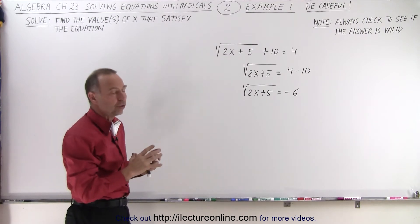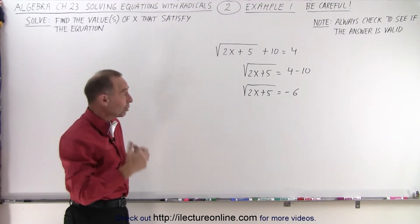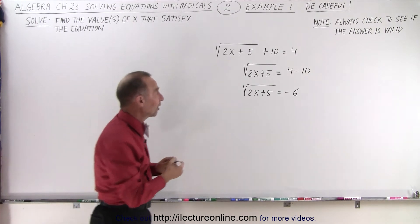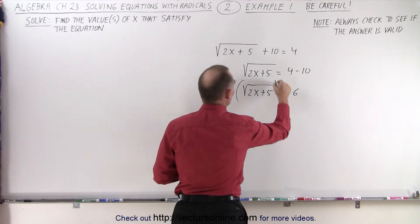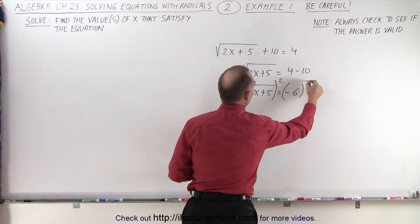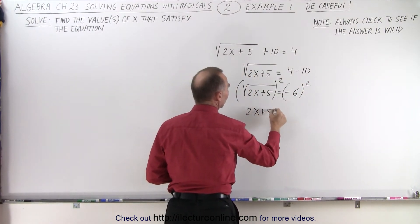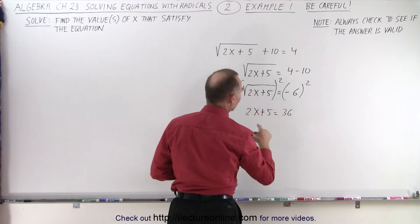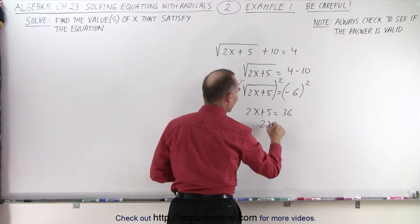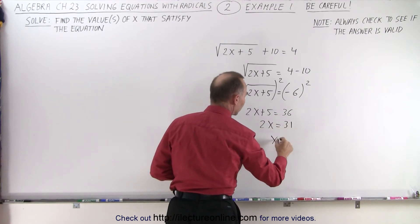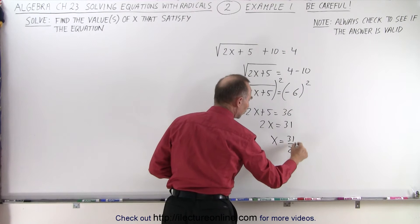But let's say we didn't notice that, and we continue with the problem. So the next thing to do would be to square both sides of the equation. So we're going to square the left side, and we're going to square the right side. So here, we end up with 2x plus 5 is equal to 36. Move the 5 across, we get 2x is equal to 36 minus 5, which is 31. Or x equals 31 divided by 2.